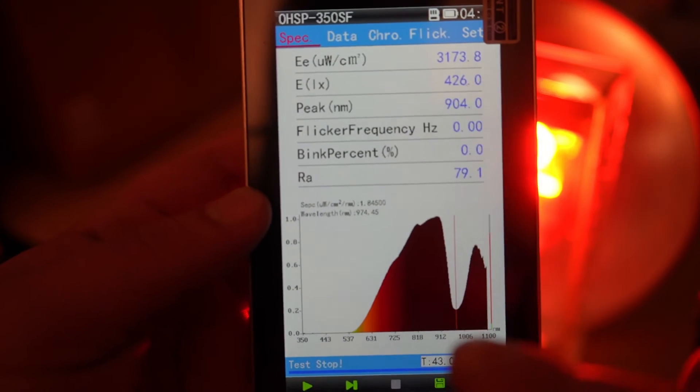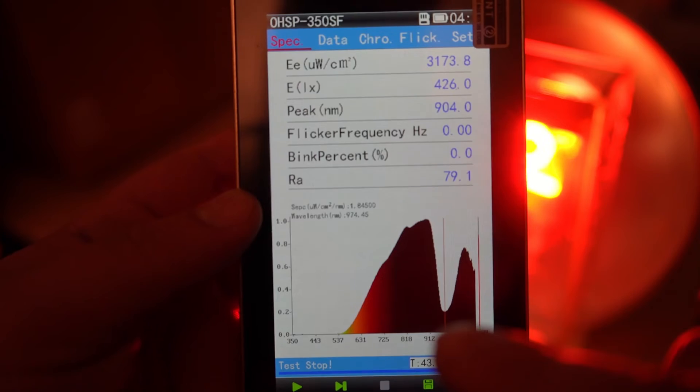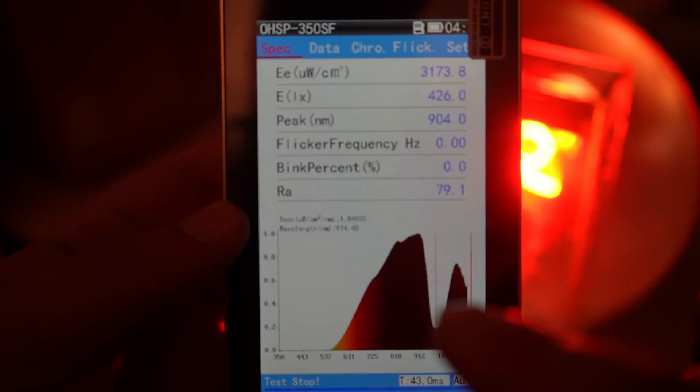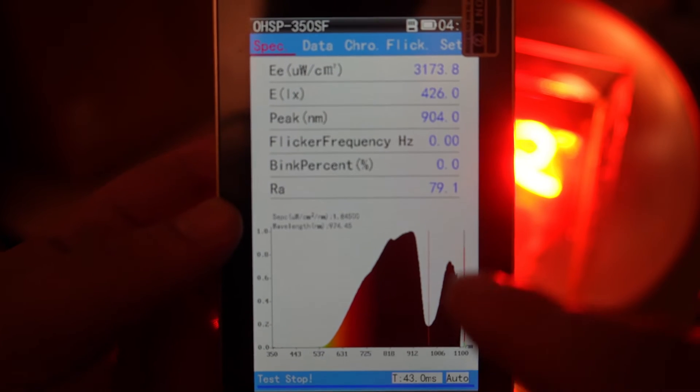And there's a big dip in the mid-900s, around 970, because there's a peak of water absorption in the mid-900s. So the water filter is absorbing more of that middle 900s.